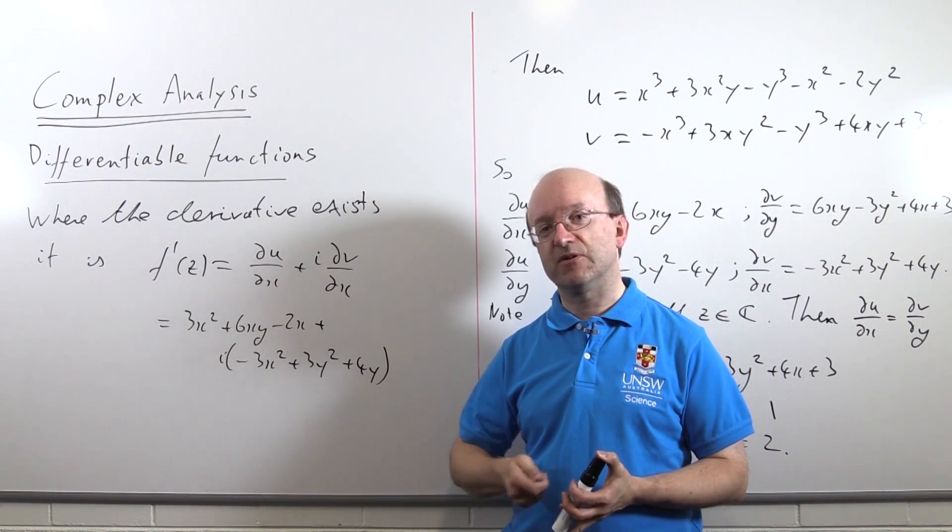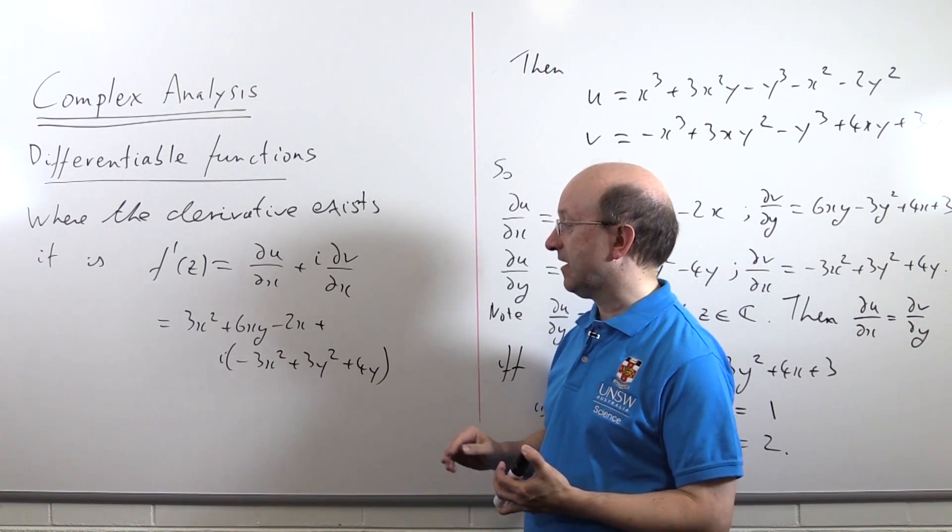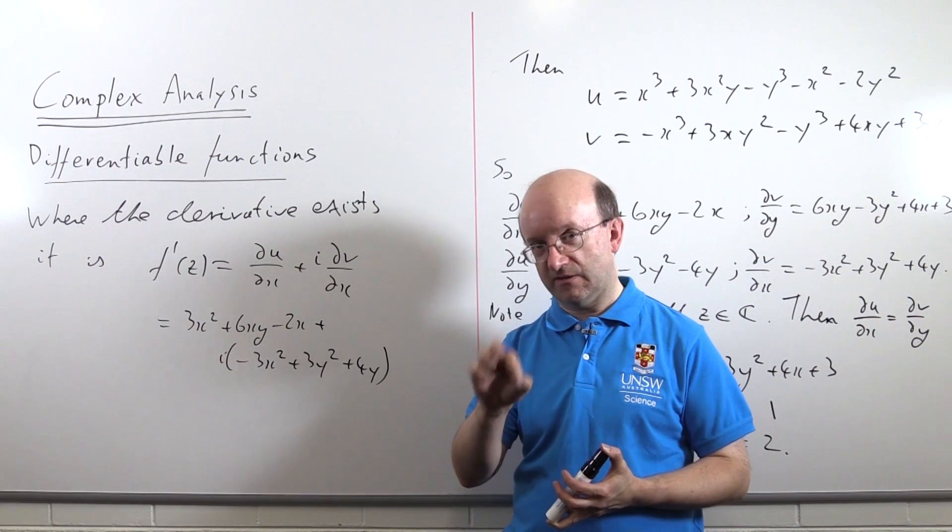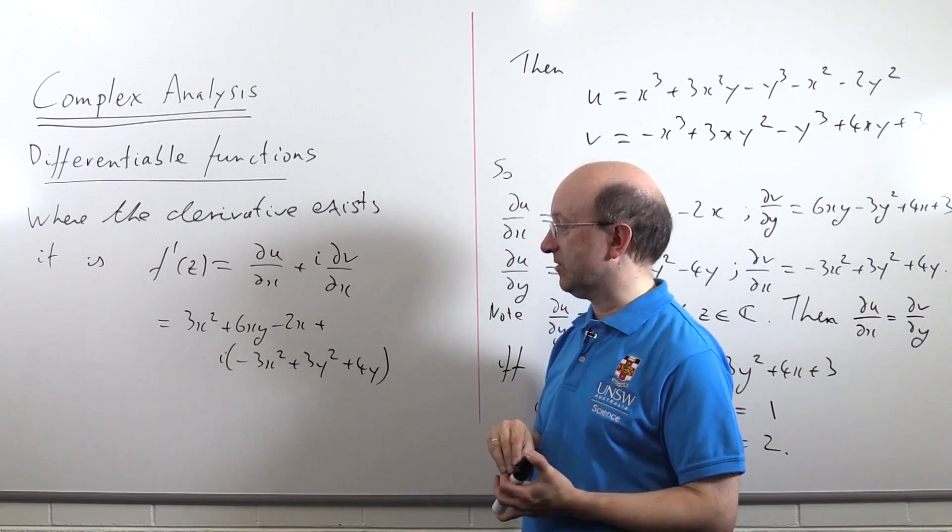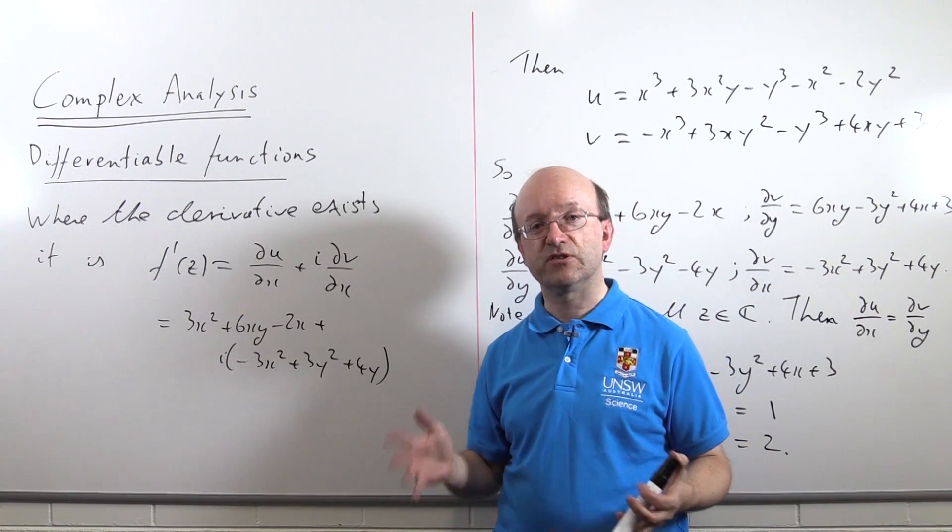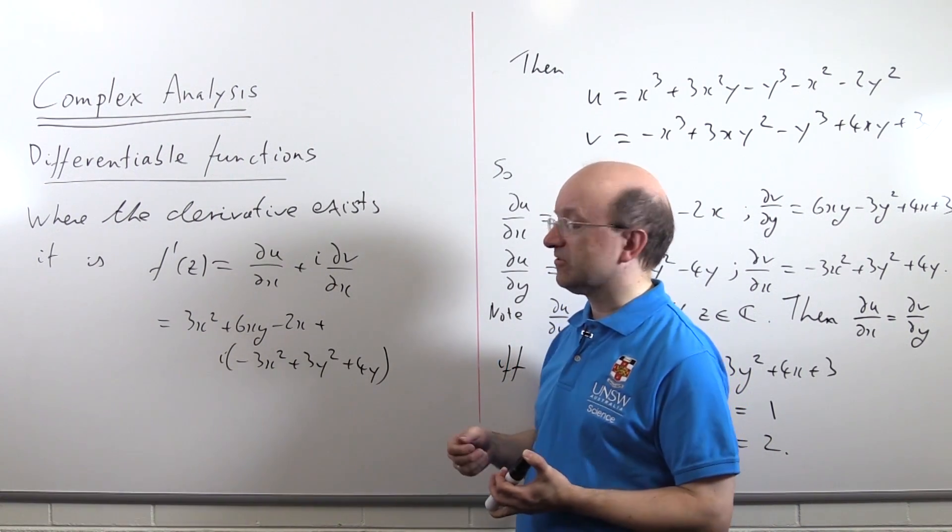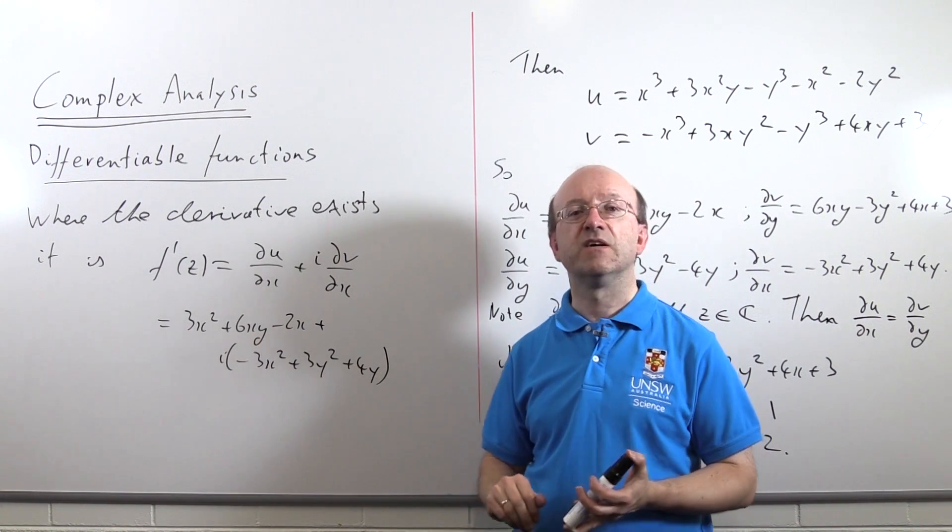We would have suspected that from the beginning because the function was written in terms of x and y, but that's not a guarantee. Analytic means not just differentiable, but differentiable at a point and everywhere around that point in some sort of open neighborhood. But in this case, our function is only differentiable on a circle, and a circle doesn't have any open neighborhoods in it, so it can't be analytic anywhere at all. This is a function that is analytic nowhere.